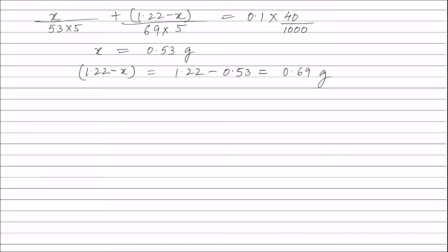Now, 20 ml portion of the solution was heated with excess barium chloride. On heating with excess barium chloride, both sodium carbonate and potassium carbonate react with barium chloride and the product contains a precipitate of barium carbonate.